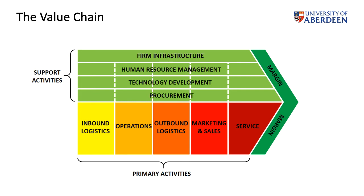The value chain is formed of two types of activities. Those activities central to the manufacturing or production of the service are shown in colors at the bottom — they are the primary activities. These include inbound logistics: how you procure goods that you can transform into other goods; operations; outbound logistics: how you distribute these things; how you market them and sell them; and finally, the service associated with the product. These have to do with the normal operation of a business.